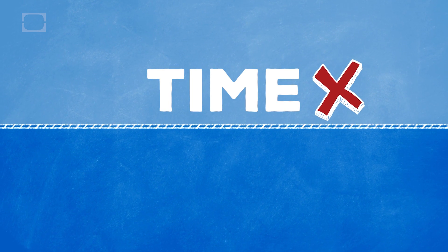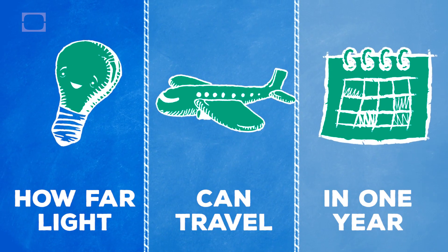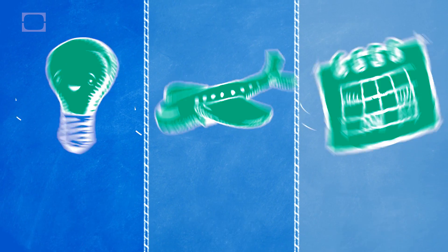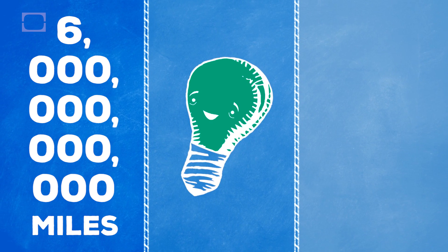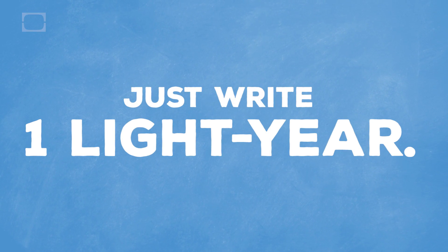Even though it may sound like a unit of time, it's actually a unit of distance. Specifically, it's how far a beam of light can travel in one year, which is about 6 trillion miles or 9.5 trillion kilometers. See, it's just easier to write one light year.